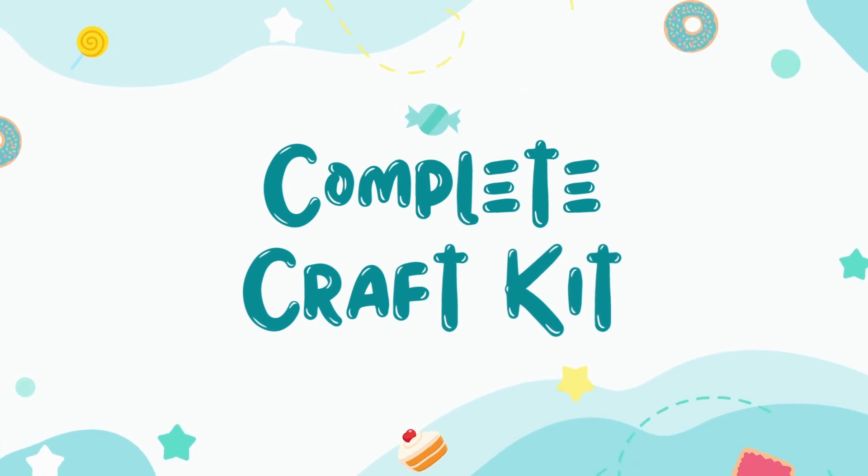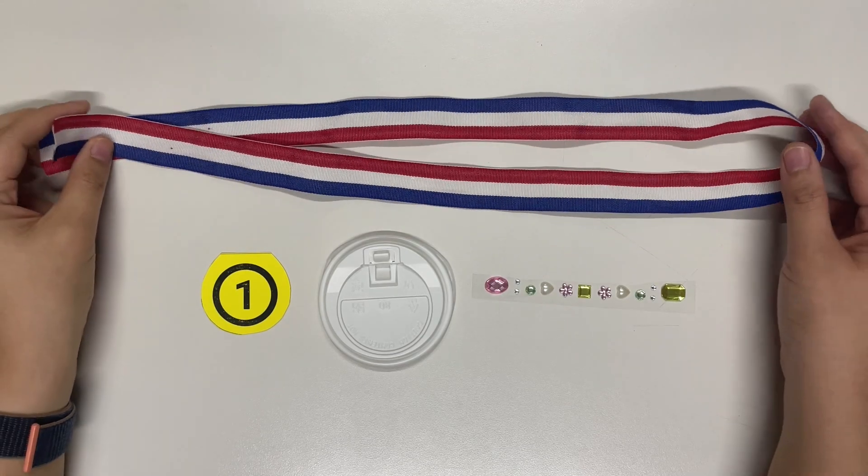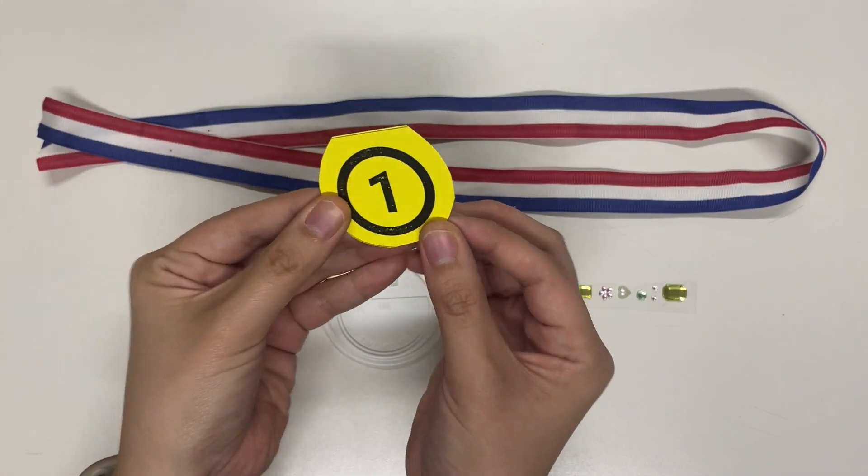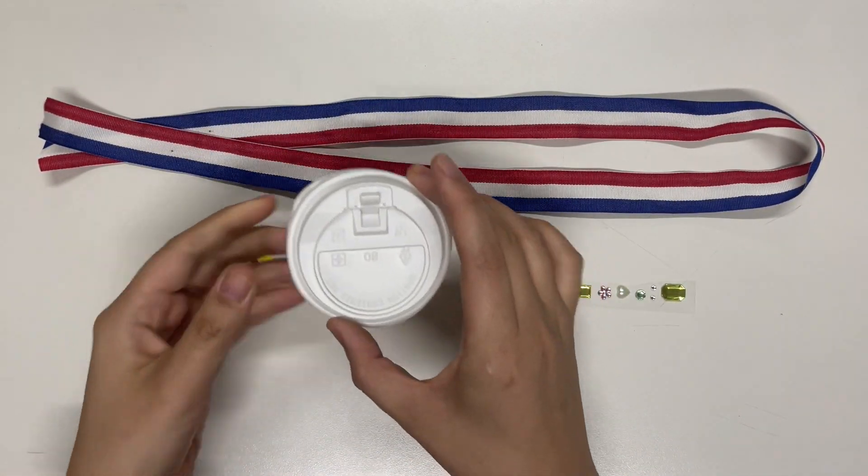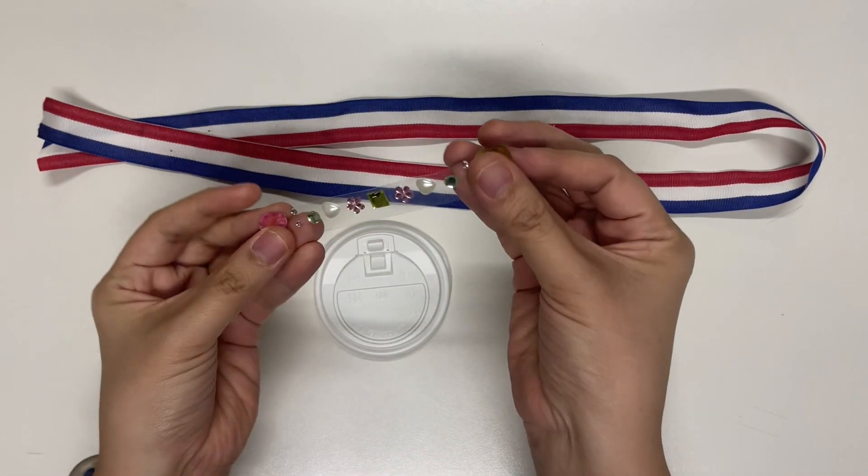The complete craft kit should contain the following: first is our three foot ribbon, our number one template with double-sided tape at the back, our coffee cup lid, and a section of our gem stickers.